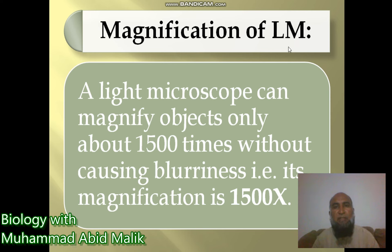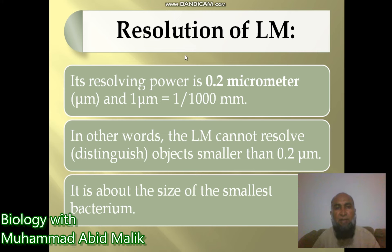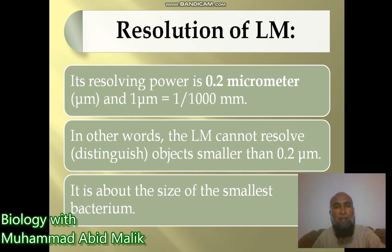A light microscope can magnify objects up to about 1500 times without causing blurriness — its magnification is 1500x. Its resolving power is 0.2 micrometers, where 1 micrometer equals 1/1000 mm. The light microscope cannot resolve objects smaller than 0.2 micrometers, which is about the size of the smallest bacterium. So with a light microscope, we can see the smallest bacterium but cannot study its individual parts.